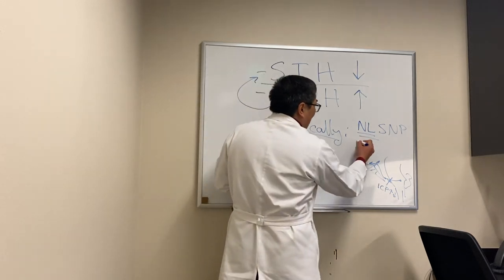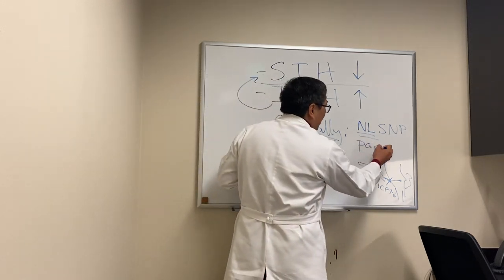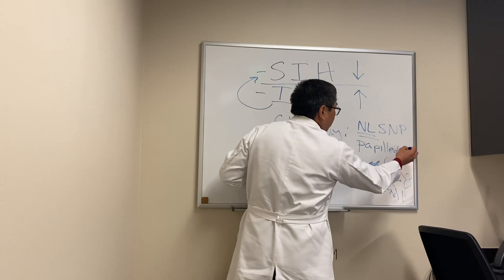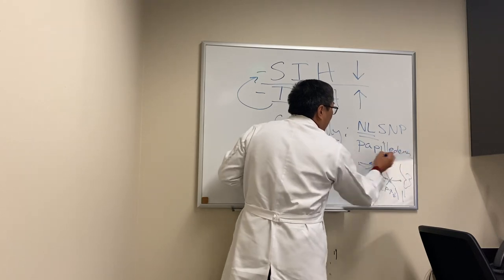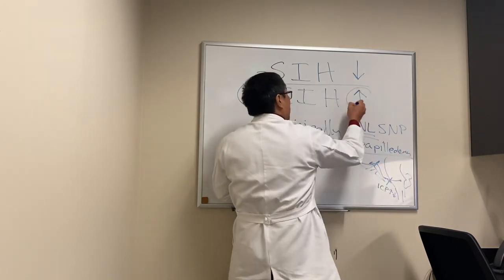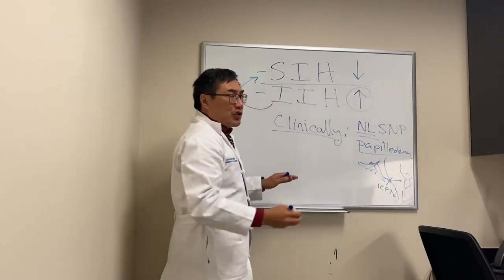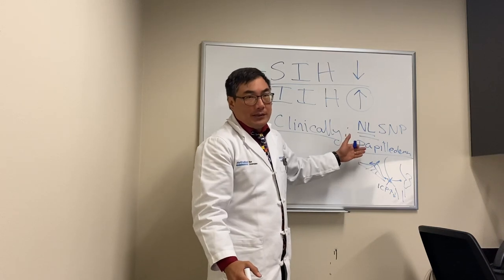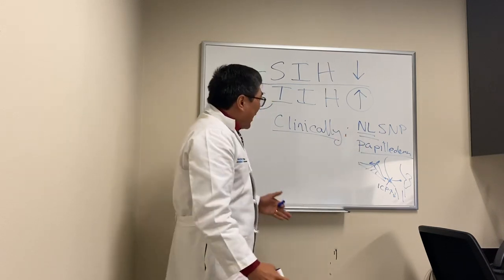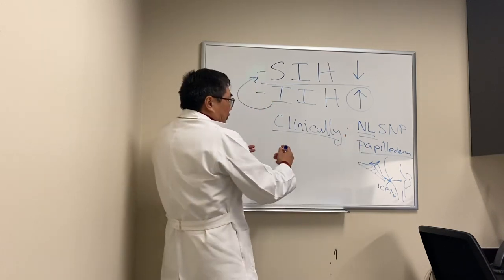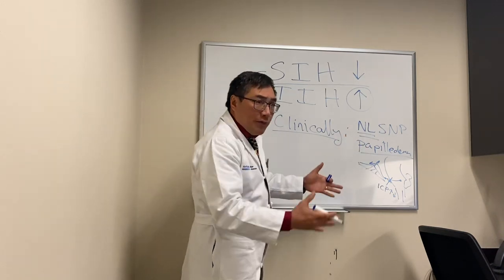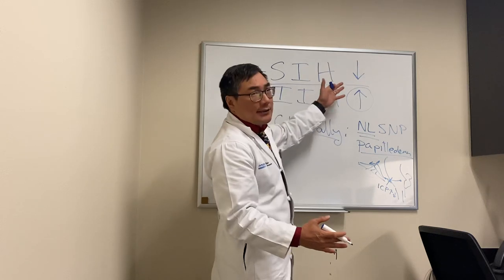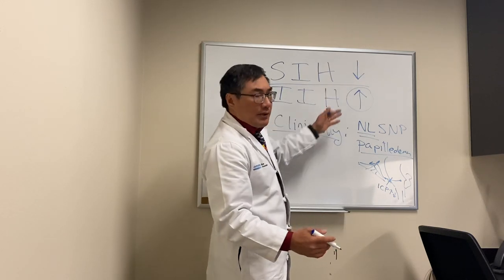In addition, if it's high pressure, normally we have papilledema. That is a differentiating feature because intracranial hypotension does not produce papilledema. However, if the nerve is already atrophic or if the nerve is normal, it doesn't differentiate between the two.